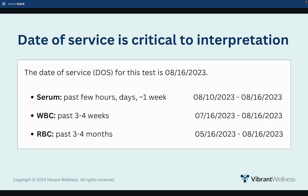Note that the date of service is critical to interpretation. The date of service for this test is August 16th, 2023. Serum indicates micronutrient status from the past few hours to up to one week — so August 10th through 16th. White blood cells reflect the past three to four weeks of micronutrient status, so July 16th through August 16th. Whereas red blood cells reflect the past three to four months, looking back all the way to May 16th through August 16th.